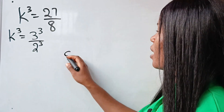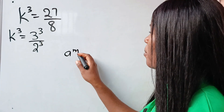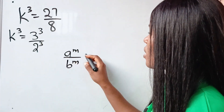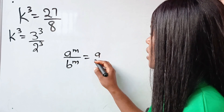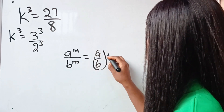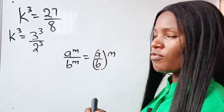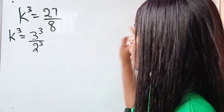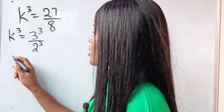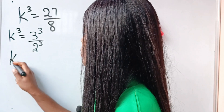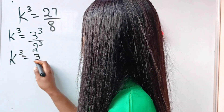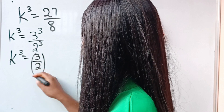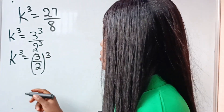Now where you have a to the power of m divided by b to the power of m, this equals a divided by b, everything raised to the power of m. So that means we can write this as k to the power of 3 is equal to 3 divided by 2, raised to the power of 3.